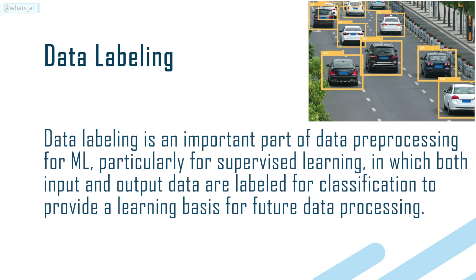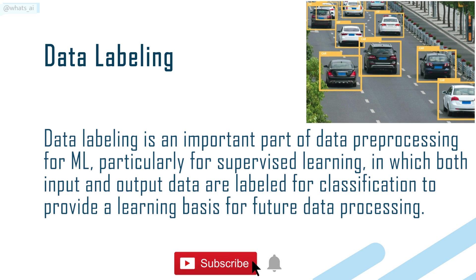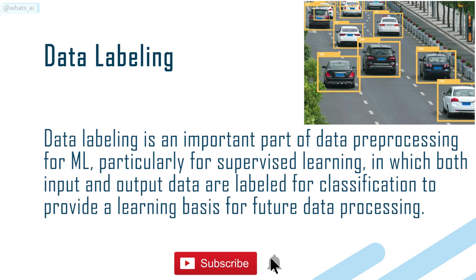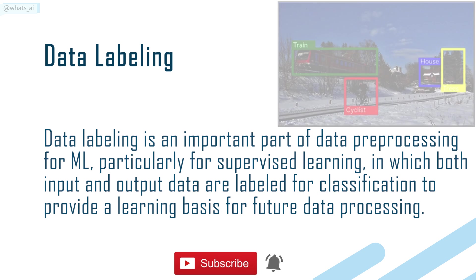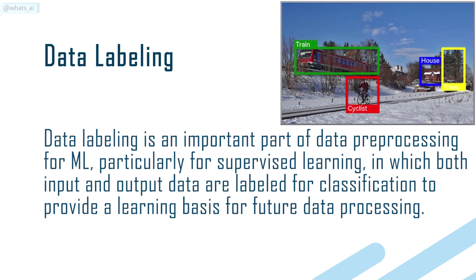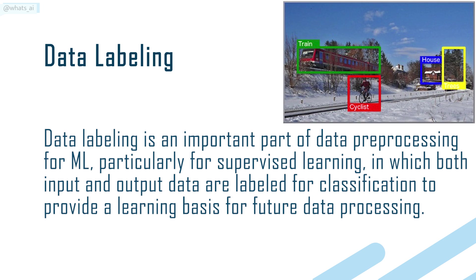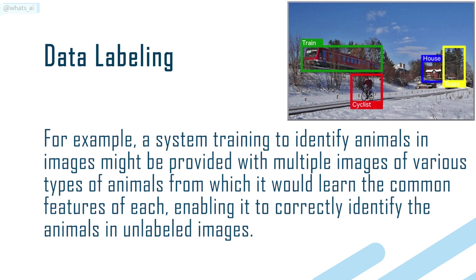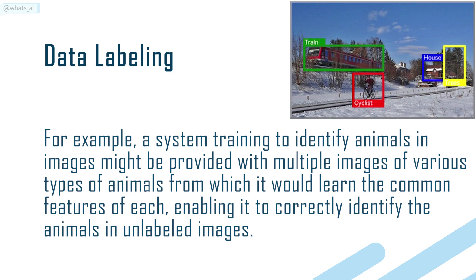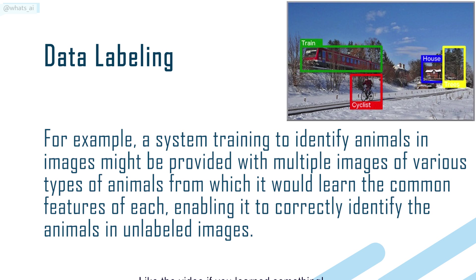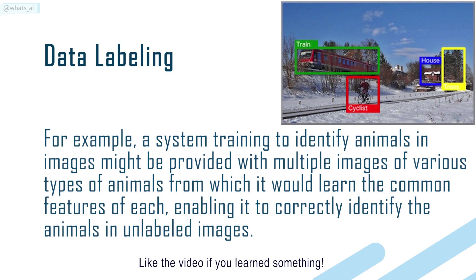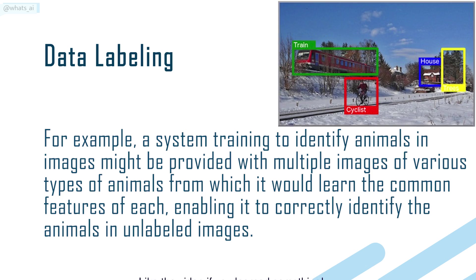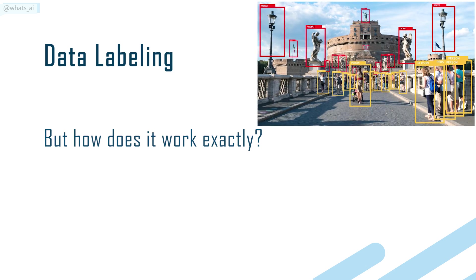Data labeling is an important part of data pre-processing for ML, particularly for supervised learning, in which both input and output data are labeled for classification to provide a learning basis for future data processing. For example, a system training to identify animals in images might be provided with multiple images of various types of animals, from which it would learn the common features of each, enabling it to correctly identify the animals in unlabeled images.